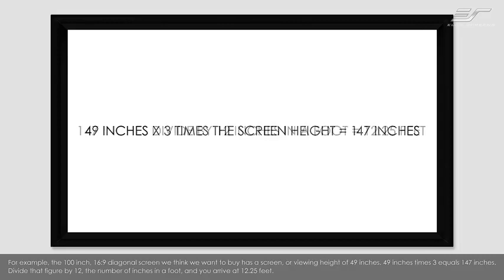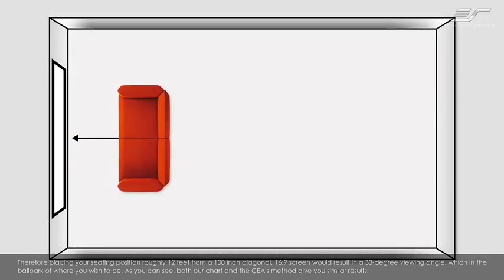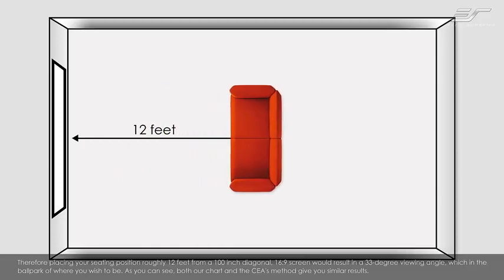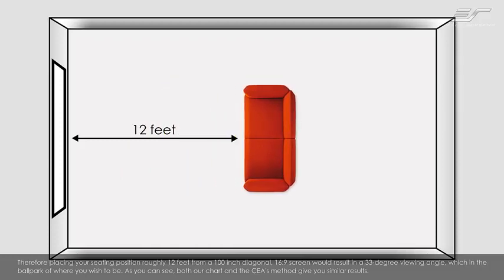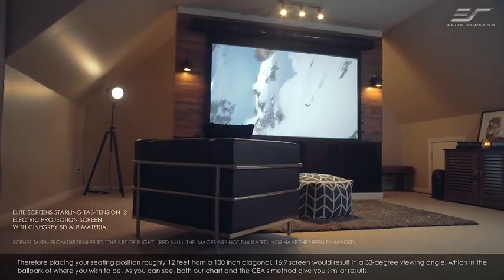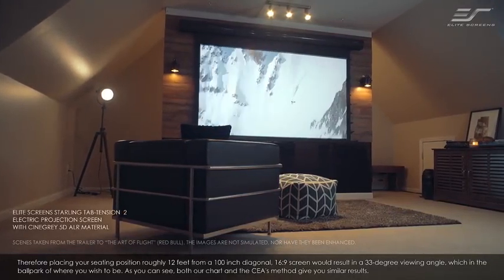49 inches times 3 equals 147 inches. Divide that figure by 12, the number of inches in a foot, and you arrive at 12 and a quarter feet. Therefore, placing your seating position roughly 12 feet back from the 100-inch diagonal 16x9 screen would result in a 33-degree viewing angle, which is in the ballpark of where you wish to be. As you can see, both our chart and the CEA's method give you similar results.